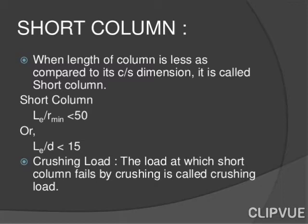Short column: When the length of the column is less as compared to its cross-sectional dimension, it is called a short column. The criterion is Le/R_min should be less than 50, or Le/D should be less than 15. The load at which a short column fails by crushing is called the crushing load.